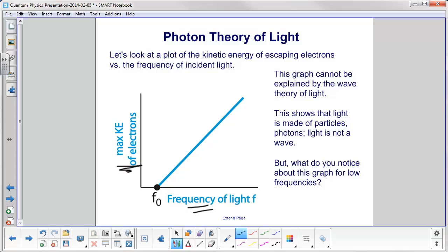This graph cannot be explained by wave theory. It indicates that light is made of particles, photons. Light is not a wave. This was shown earlier in the chapter.